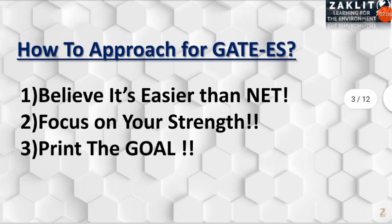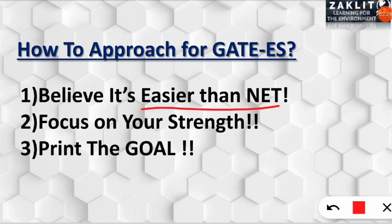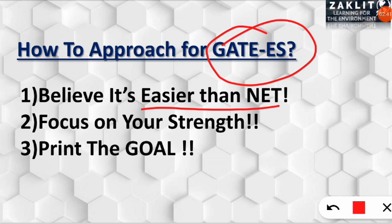Now let's see how to approach the GATE Environmental Science and Engineering paper. Since the word 'engineering' is attached, it benefits engineering students due to the math component. However, even if math is your weakness, you can still qualify. The first key point is that GATE is easier than NET — in GATE you need accuracy on 30–40 marks to qualify, unlike NET where you must attempt many more questions.